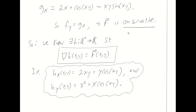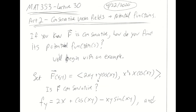Now that we know it's conservative, we know that it is the gradient of something — that is the definition of a conservative vector field. There is some scalar-valued function that big F hat is the gradient of. Since we're already using little f and little g, I'm going to call it little h. So I know there is some little h, a real-valued function of two real variables, such that the gradient of little h gives me big F hat. Little h is the potential function for big F.